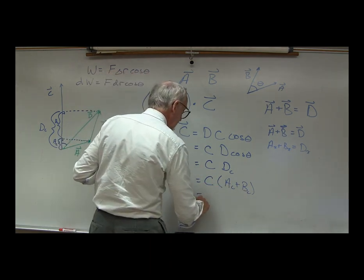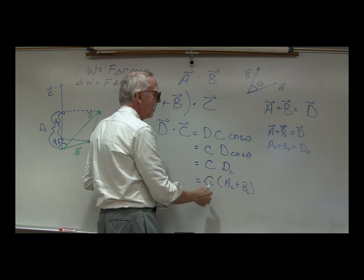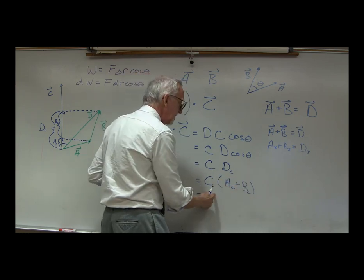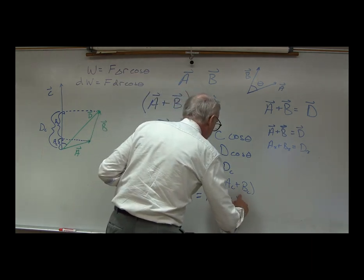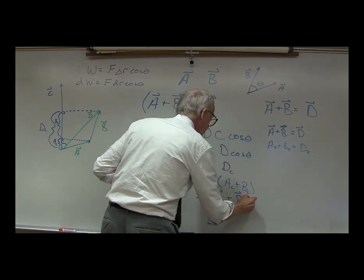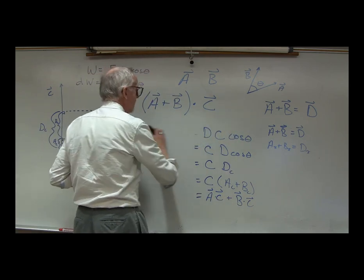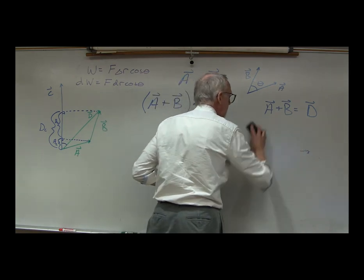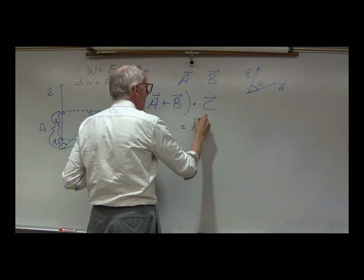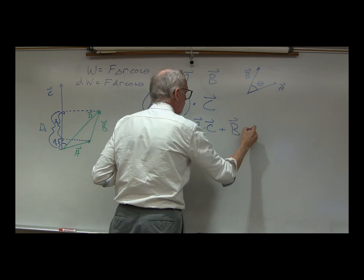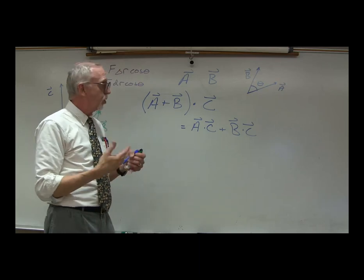The component of D along C is the sum of the component of A along C and the component of B along C. That's A·cosθ_AC plus B·cosθ_BC, which is A·C plus B·C. So (A+B)·C equals A·C plus B·C. That's the distributive property of the dot product.